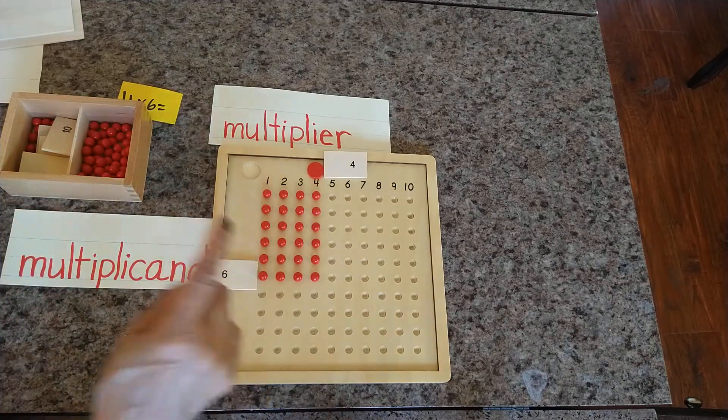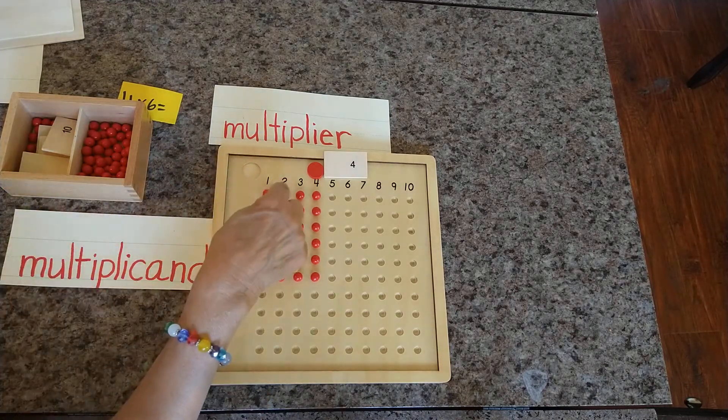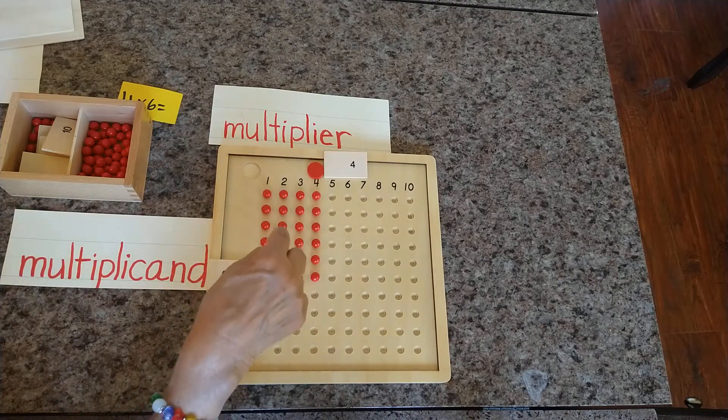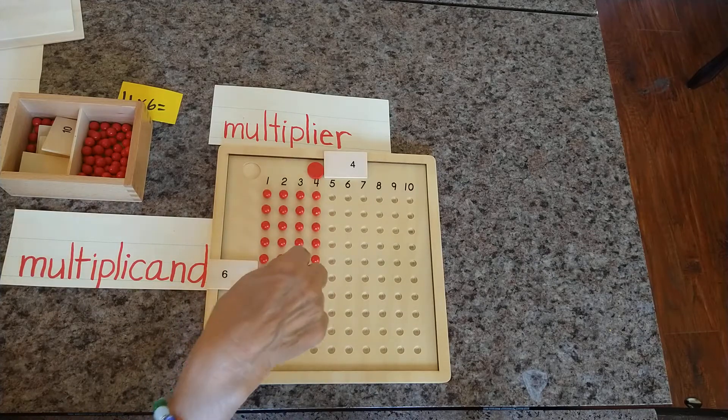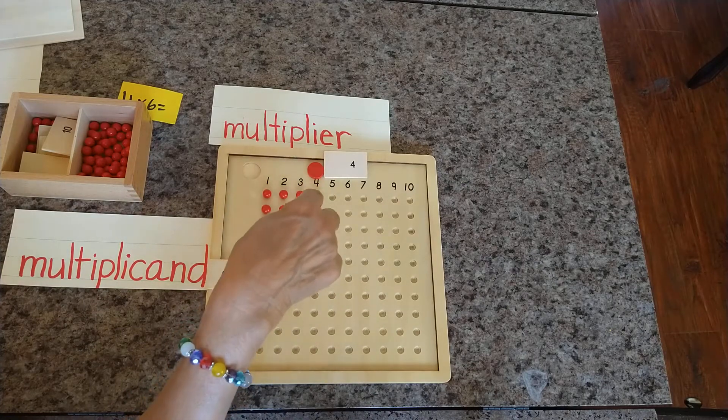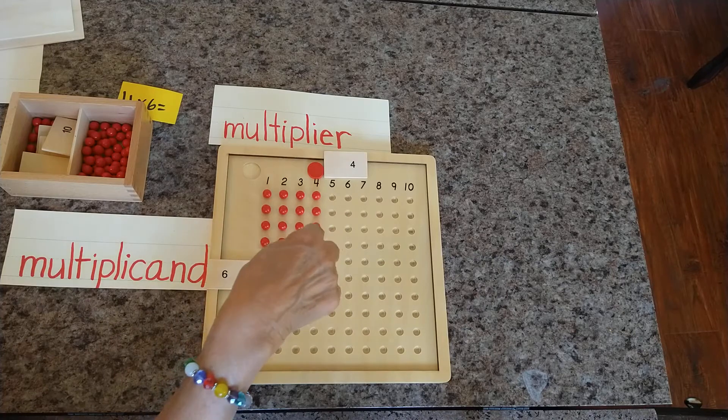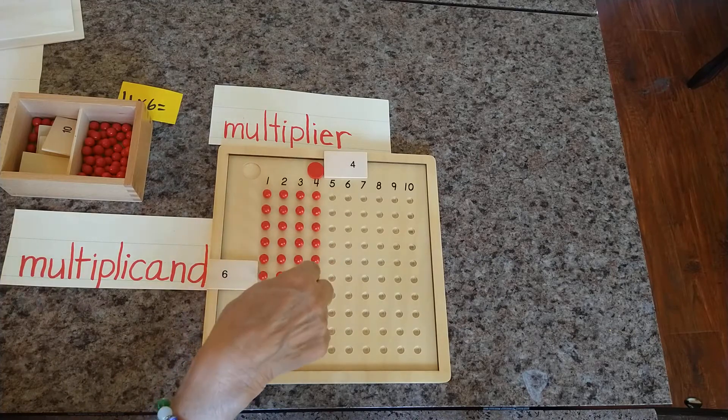We already know this is 6. What comes after 6? 7, 8, 9, 10, 11, 12, 13, 14, 15, 16, 17, 18, 19, 20, 21, 22, 23 and 24.